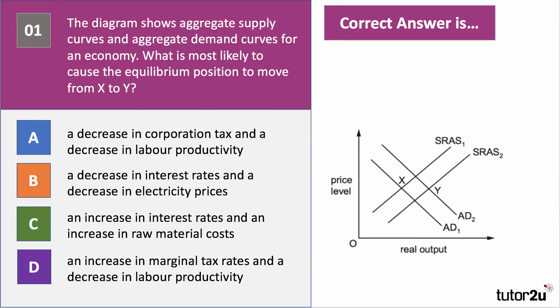Here's question one. The diagram shows aggregate supply curves and aggregate demand curves for a country. What is most likely to cause the equilibrium position to move from point X to point Y? Press the pause button, have a go at the question, and then press play when you want the answer.